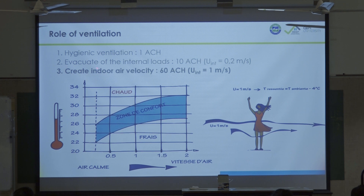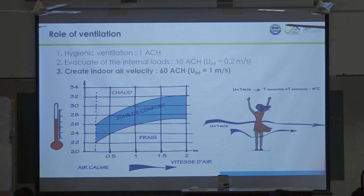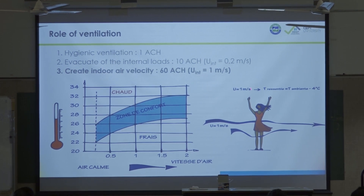If the wind potential is not enough on site, you will only be able to reach step two. As the air velocity is not enough, you have to add ceiling fans to generate an air velocity of one meter per second. If the wind potential is enough, then just thanks to the effect of the wind it will work on its own without ceiling fans.